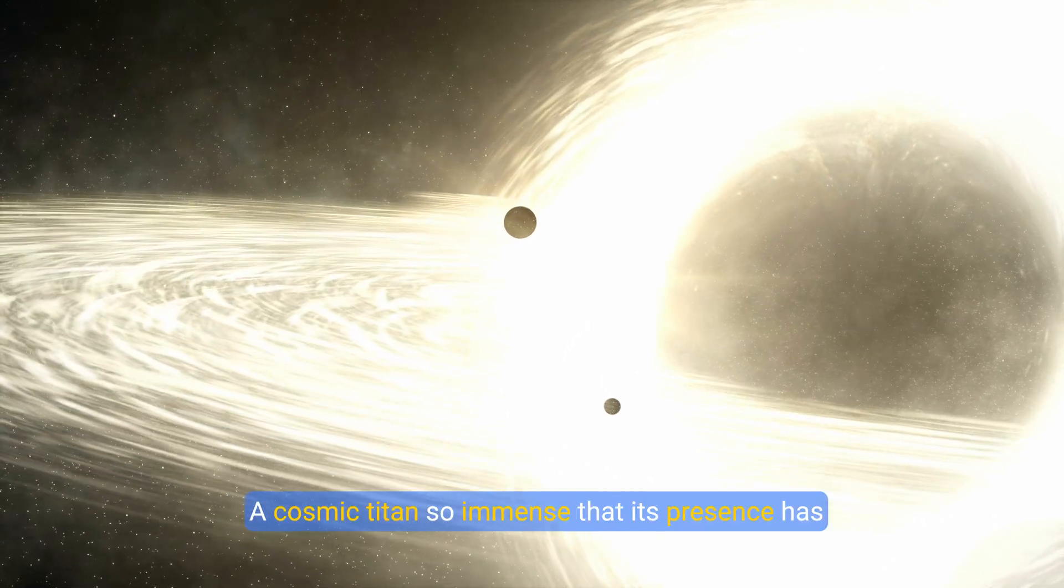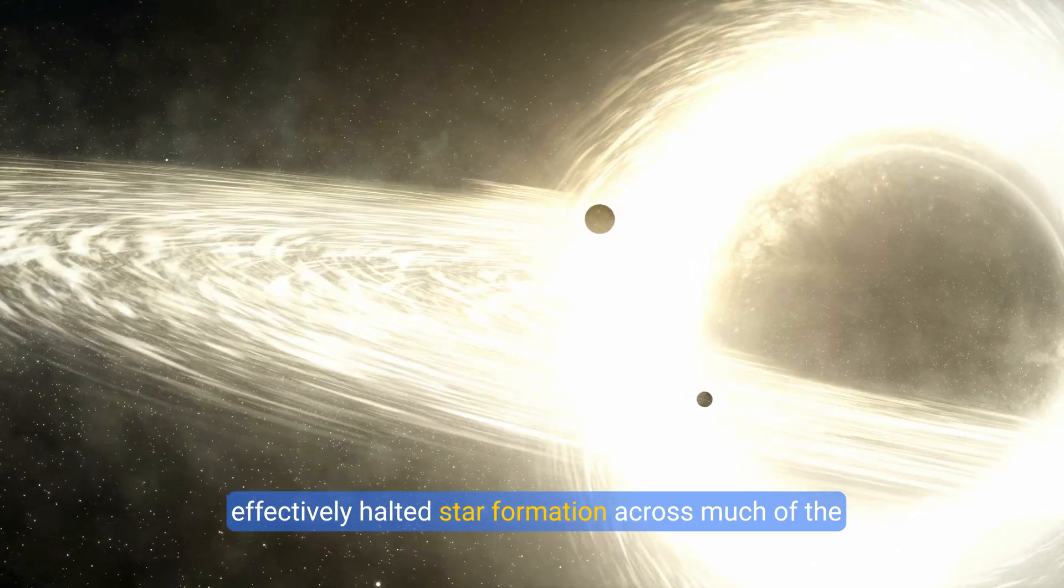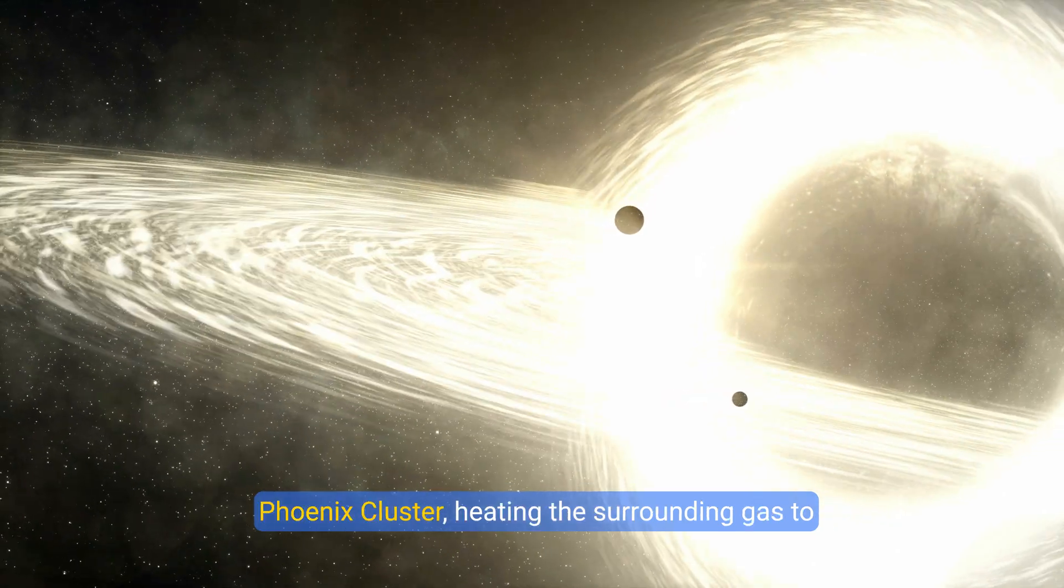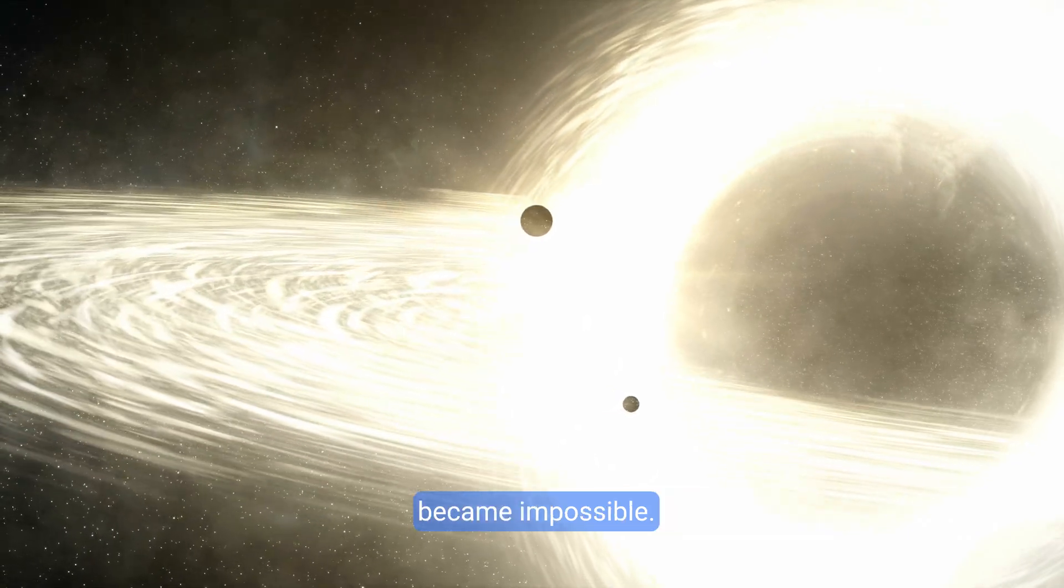The result? A cosmic titan so immense that its presence has effectively halted star formation across much of the Phoenix Cluster, heating the surrounding gas to such extreme temperatures that cooling and collapse became impossible.